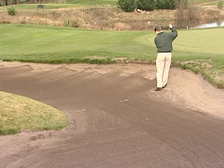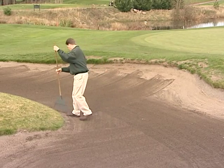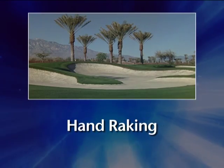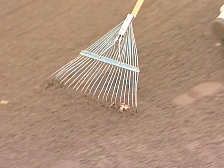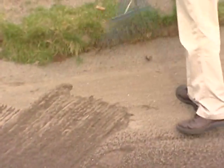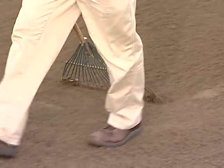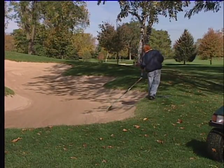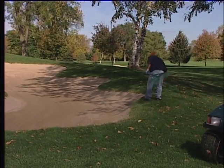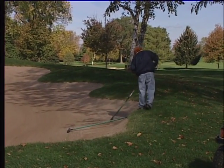Some golf courses prefer to have all bunkers raked by hand, so we will now see how to hand rake bunkers. Typically, metal leaf rakes are used to produce smoother furrows and firmer sand compared to other rakes. Your club may choose a different type of rake, depending on the golfer's preferences or the sand type. Your supervisor will show you what type of rake is used at your golf course.